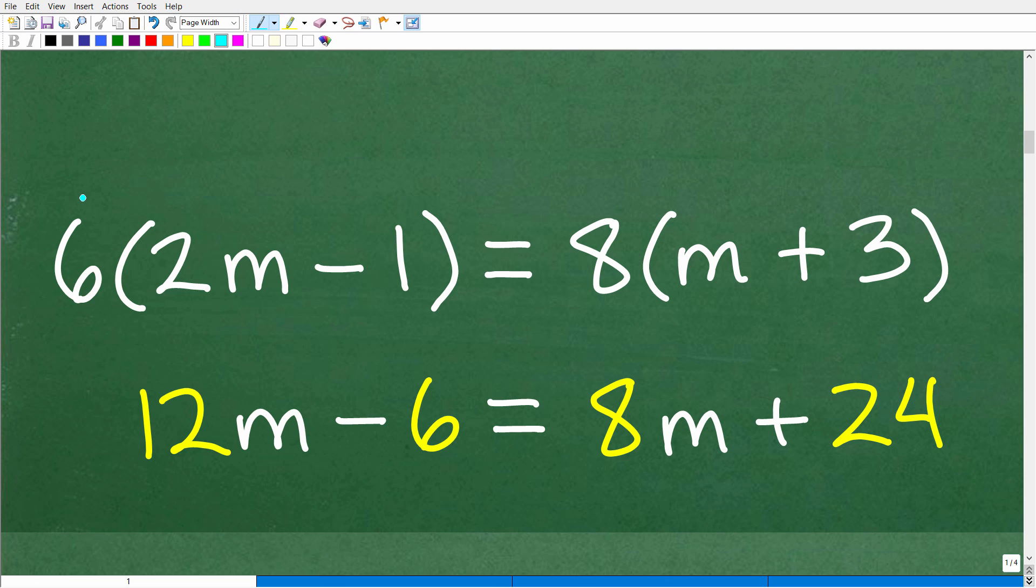So the way this works is the following. This number, six, for this example, it's going to get multiplied to this two. So six times two is 12, so we have 12M here, and then this six gets multiplied to that one. So six times one is six, so we have 12M minus six. This sign stays the same.